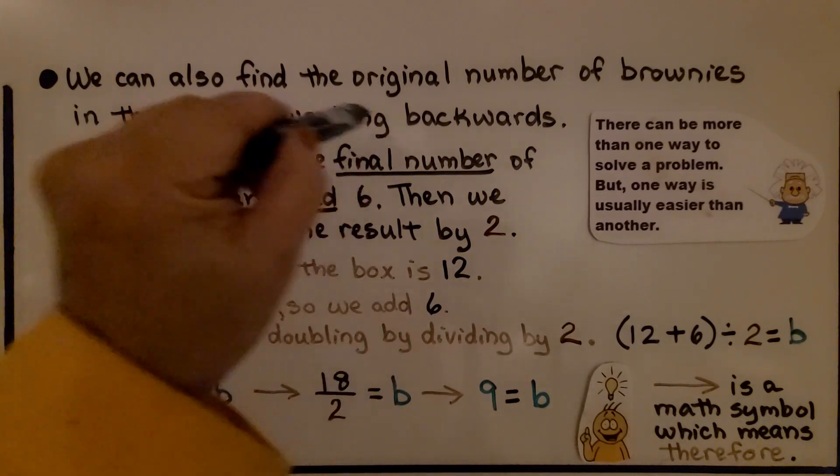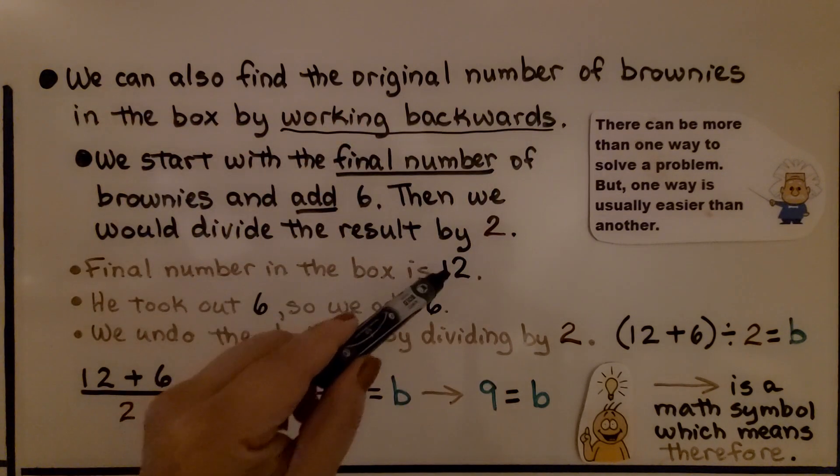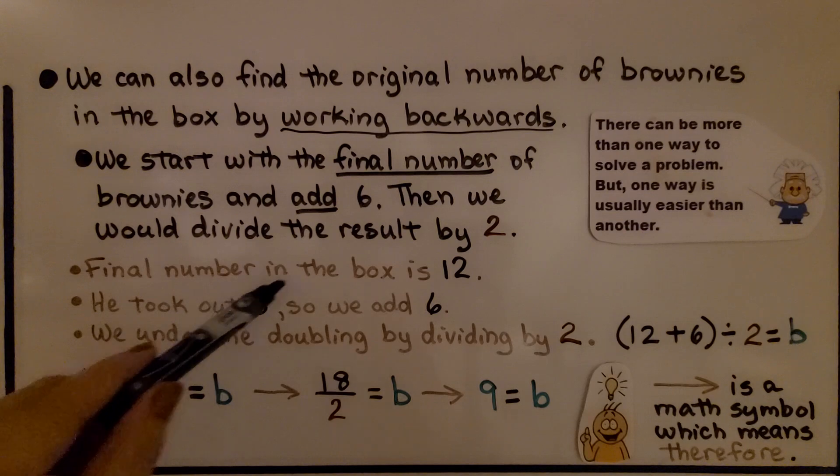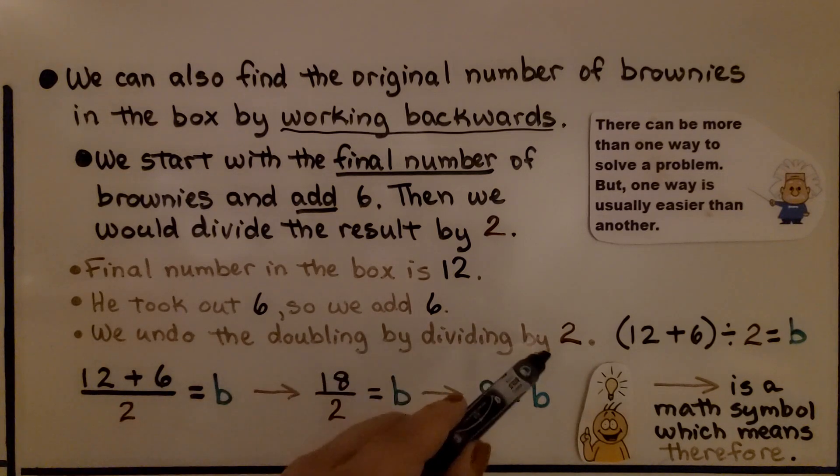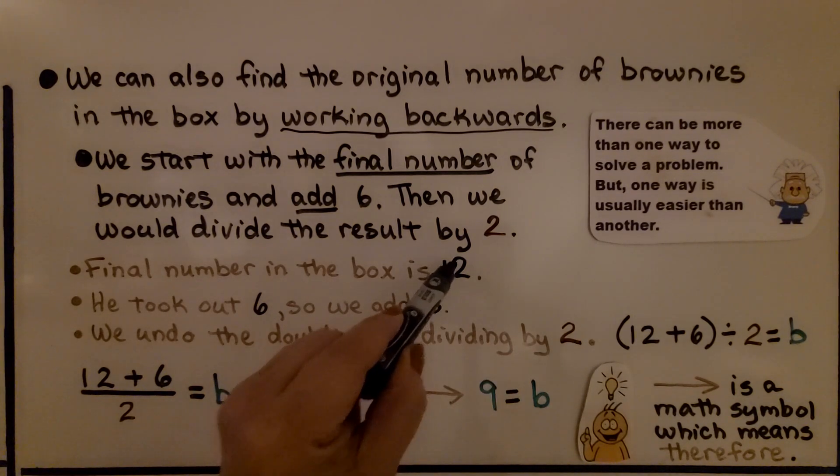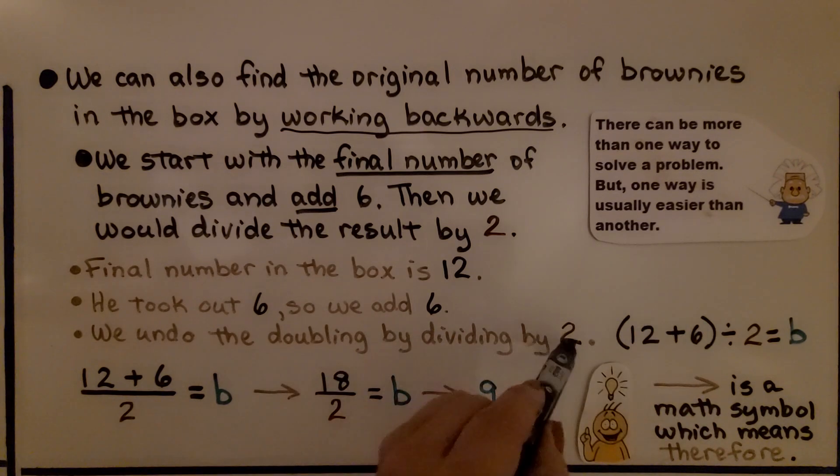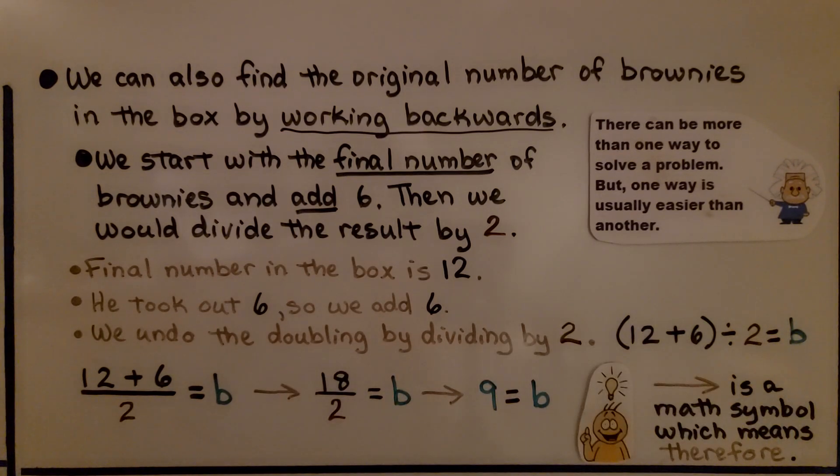We're working backwards. We're starting with the original number of 12. And since he took out 6, we add 6. And we undo the doubling of the brownies by dividing by 2. So we would have 12 plus 6 divided by 2 equals the original number of brownies. We can also write it as 12 plus 6 over 2, because this represents division. We first do the numerator. So we would have 18 divided by 2, which is 9. We know the original number of brownies is 9.